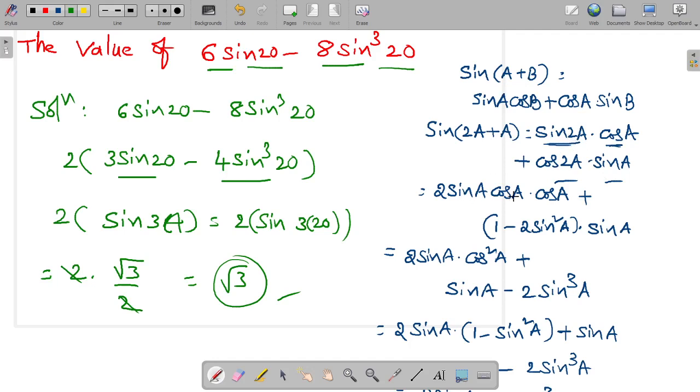Sine 2A is 2 sine A cos A into cos A plus cos 2A value is 1 minus 2 sine square A into sine A. 2 sine A into cos A into cos A, cos A plus sin A plus sin A. Sine A minus 2 sine A.